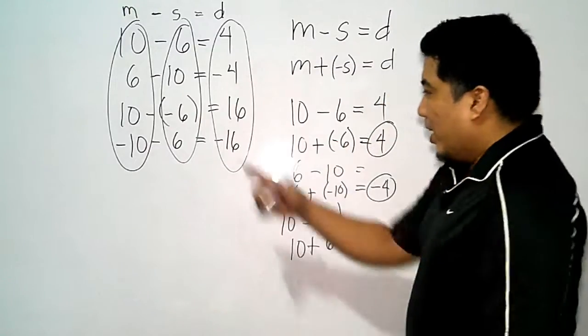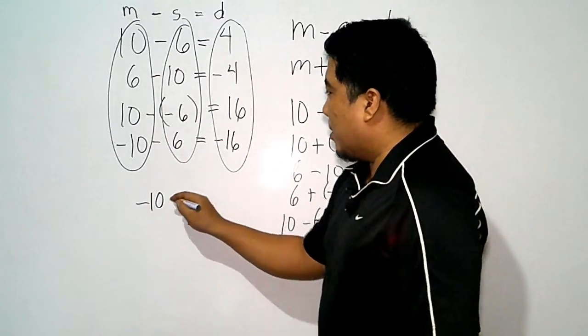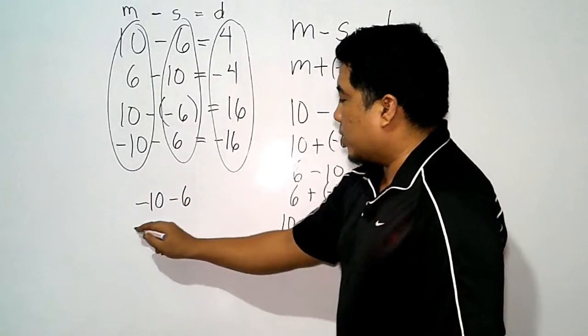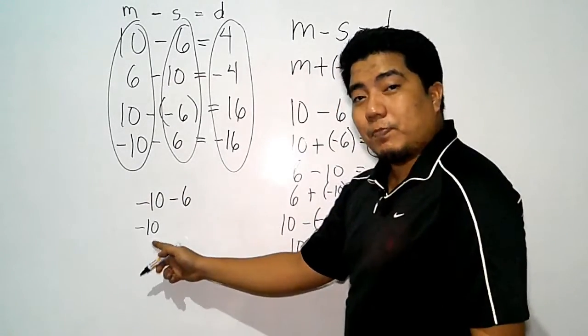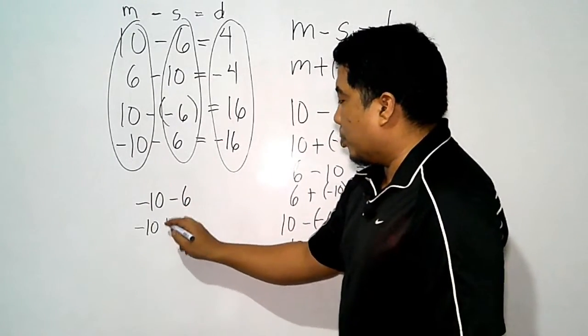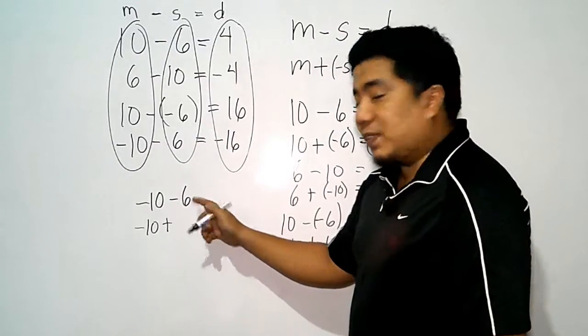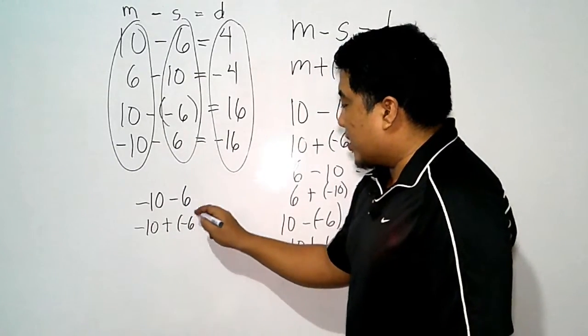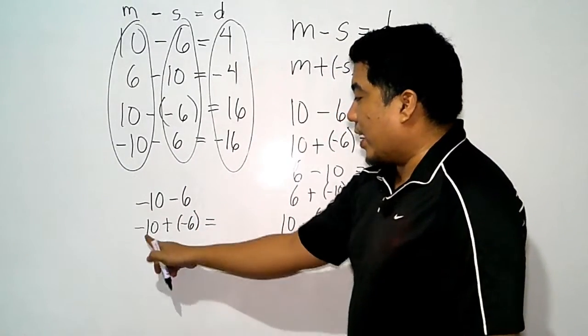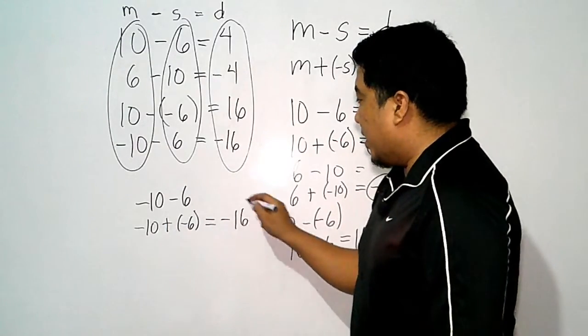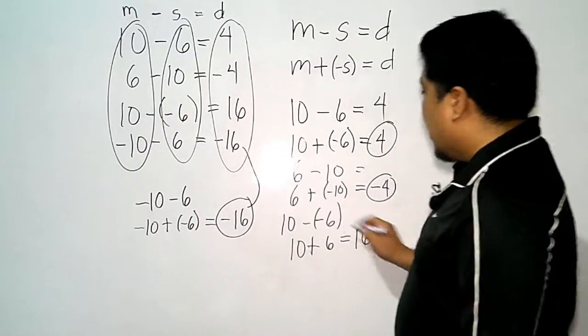And finally, if we have negative 10 minus 6, then what we will do is we copy the minuend, and then change the minus into plus, and change positive 6 into negative 6. Giving us a final answer of negative plus negative, that is negative 16, and they are just the same.